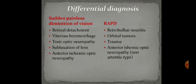For the differential diagnosis of RAPD, retrobulbar neuritis is considered — but in the given case, extraocular motility is normal, whereas in retrobulbar neuritis, extraocular motility is painful, so it is ruled out. Orbital tumors and trauma are excluded as there is no history of such conditions. The remaining diagnosis is anterior ischemic optic neuropathy of non-arthritic type.